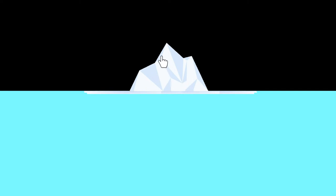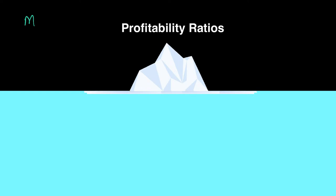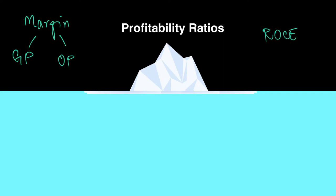This deadly iceberg represents profitability ratios. When we talk about profitability ratios, we have two types of margins: gross profit margin and operating profit margin, and then return on capital employed (ROCE). The reason I've picked an iceberg is that whatever you see above the water is only a small proportion — there's still a lot hidden underneath that you cannot see. The underneath is what we want to figure out today.